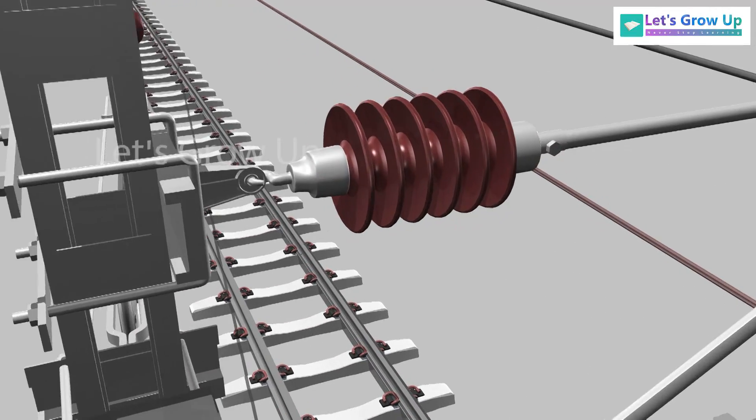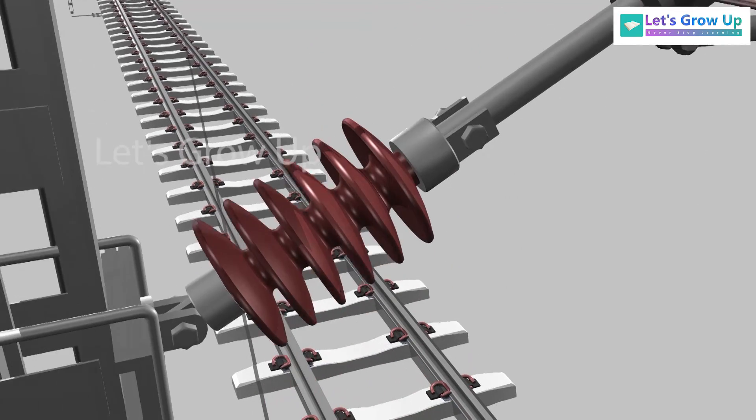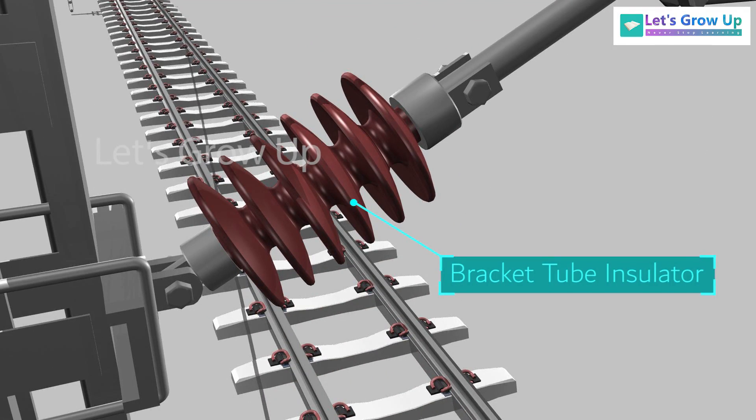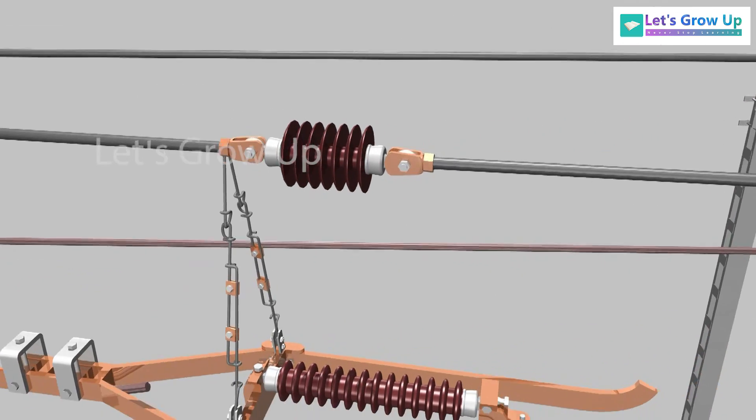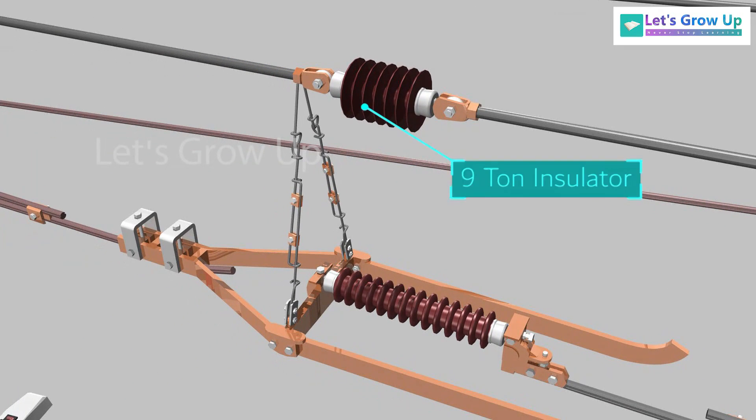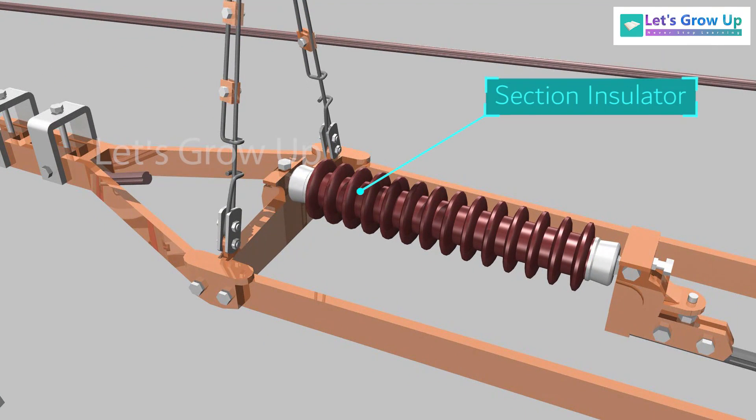Let's see various types of insulators used in OHE. This is a stay arm insulator. Bracket insulator. 9-ton insulator. And section insulator.